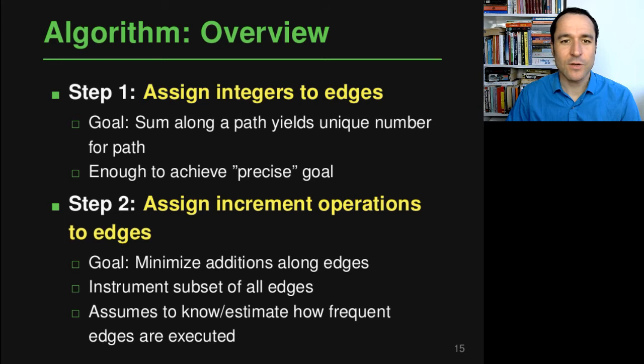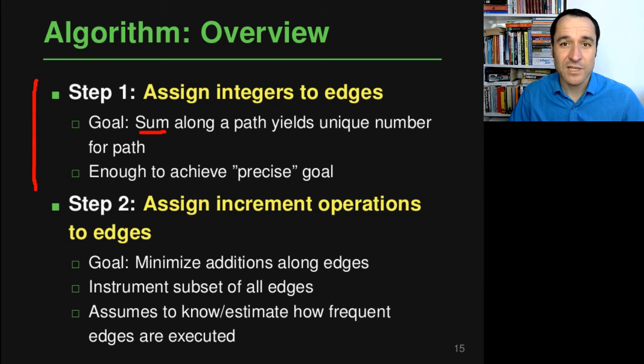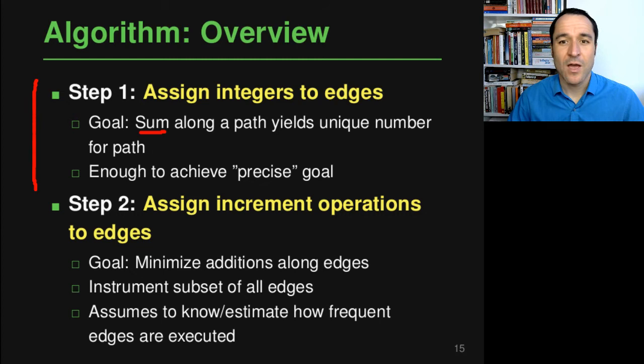Now having stated these assumptions, let's look at the algorithm, which consists of two main steps. Step one assigns integers to each edge in the graph. The goal is to assign these integers such that the sum along any particular path yields a unique number for that path — the encoding. This first step alone ensures precision: every path will have a unique number.